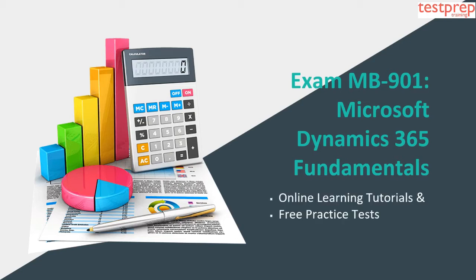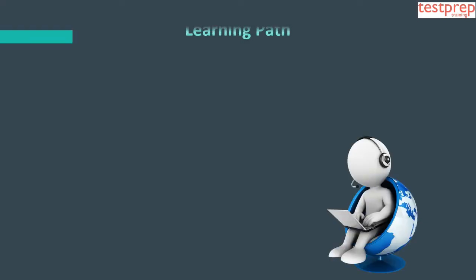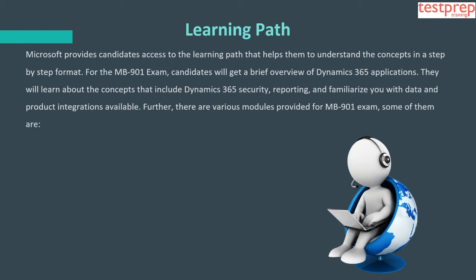This covers the positioning and benefits of adopting Dynamics 365. Microsoft provides candidates access to the Learning Path that helps them understand the concepts in a step-by-step format. For the MB-901 Exam, candidates will get a brief overview of Dynamics 365 applications. They will learn about concepts that include Dynamics 365 security, reporting, and familiarize you with data and product integrations available.